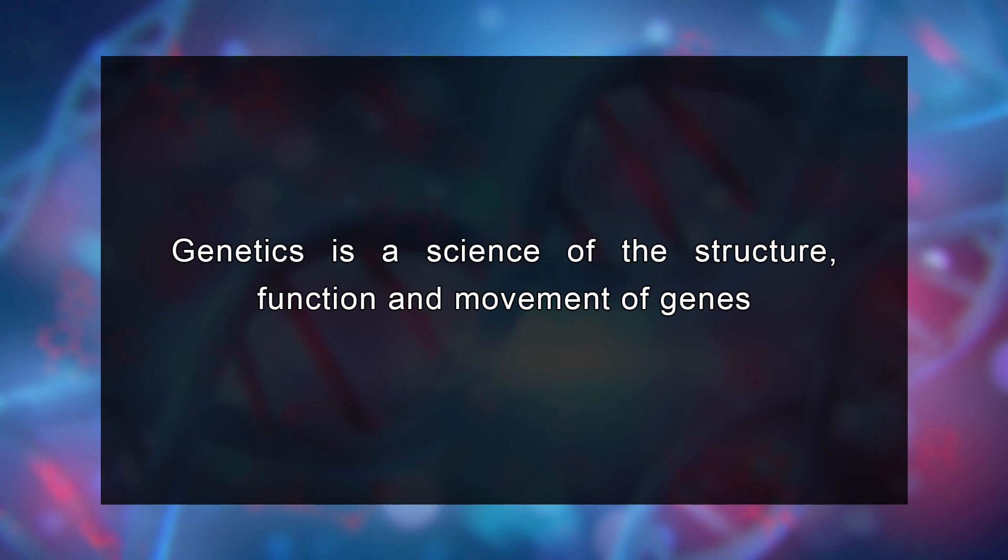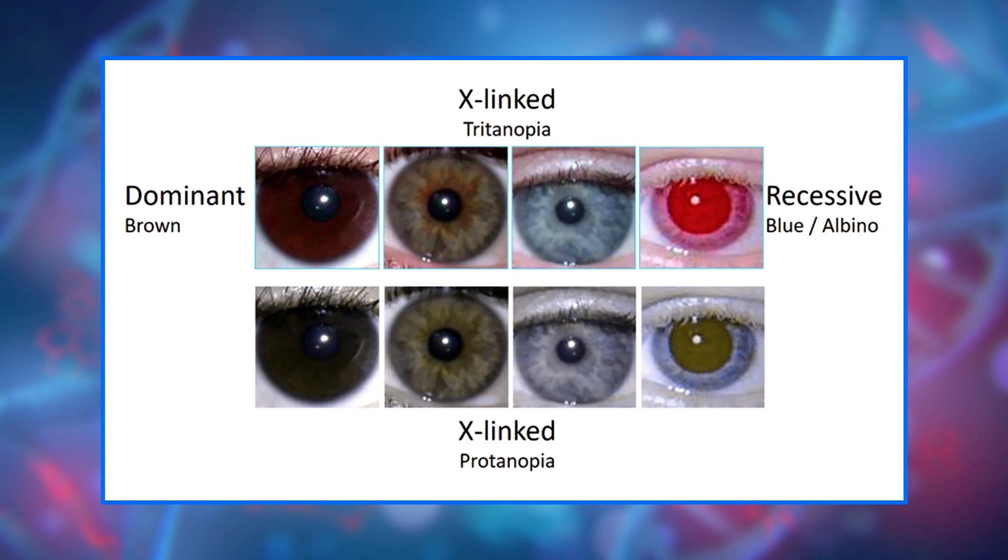This work culminated with the establishment of the complete genetic code in 1966. The stage was now set for the appearance of the new genetics. From 1865 to now, the history of genetics development is the development of human knowledge and understanding of genes. In other words, genetics is a science of the structure, function, and movement of genes. A gene is a piece of DNA which has a function such as determining eye color, hair color, skin color, or that of a disease.